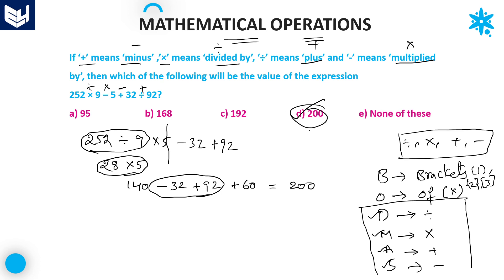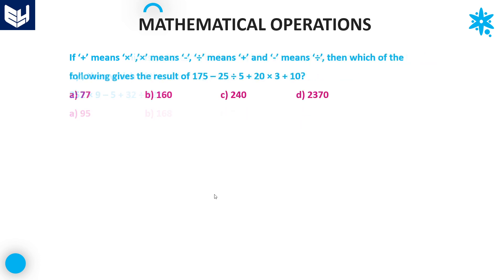Whenever these kinds of questions are given, first you need to change the signs in the given expression. After that, solve the expression using BODMAS rule. Most cases use division, multiplication, addition and subtraction — these four are very important.